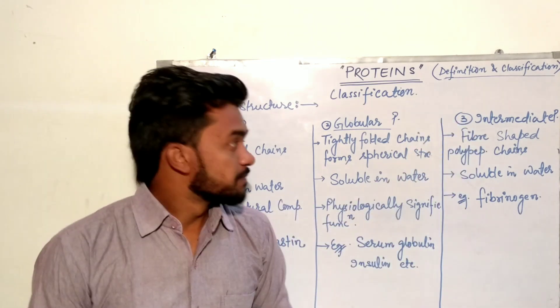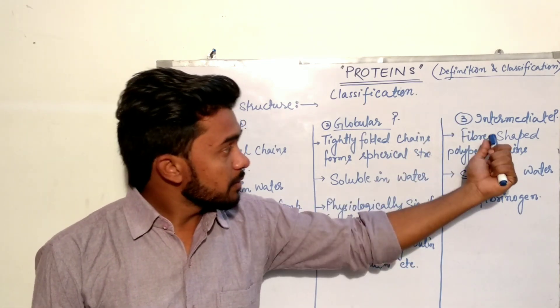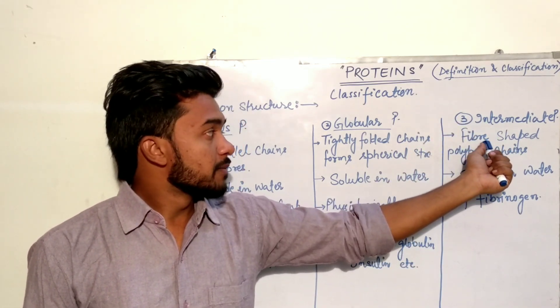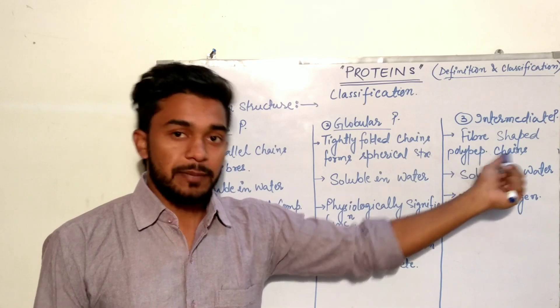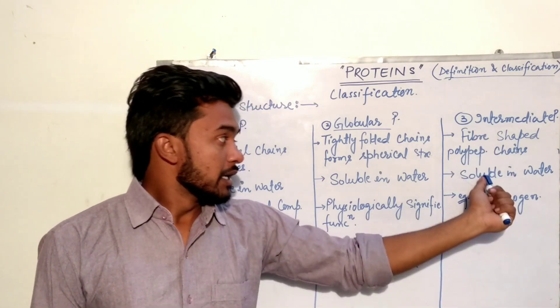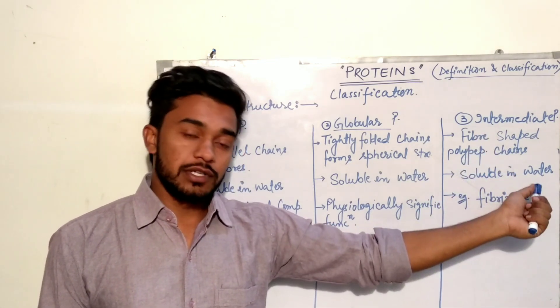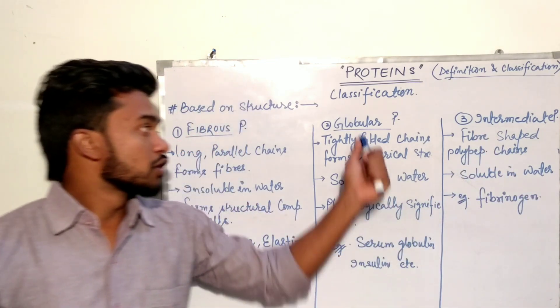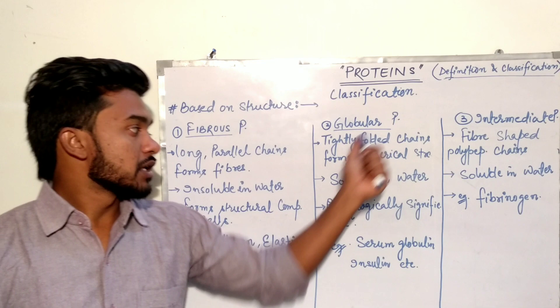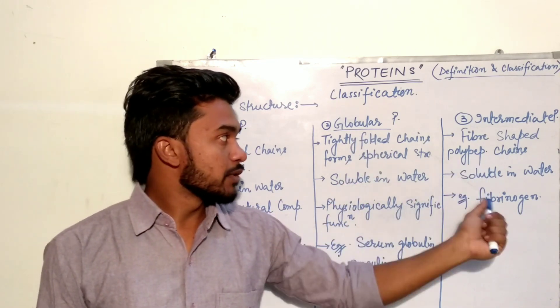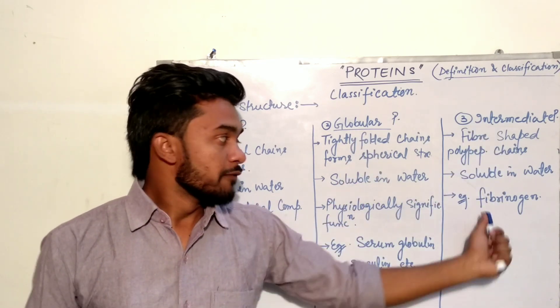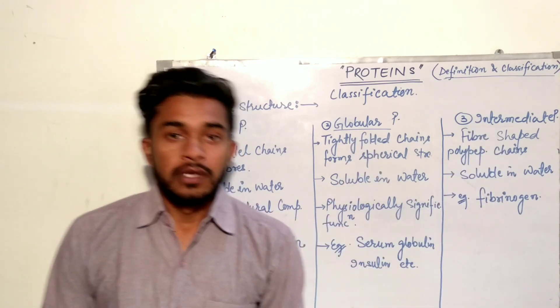Intermediate proteins are fiber-shaped polypeptide chains that are soluble in water, similar to globular proteins. An example of an intermediate protein is fibrinogen.